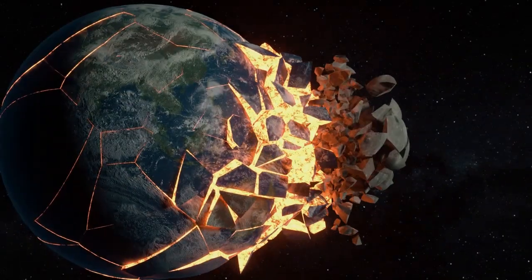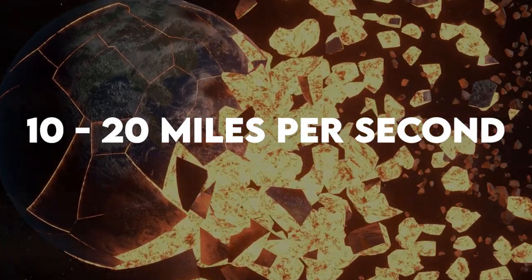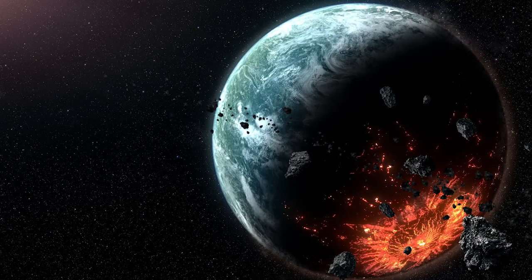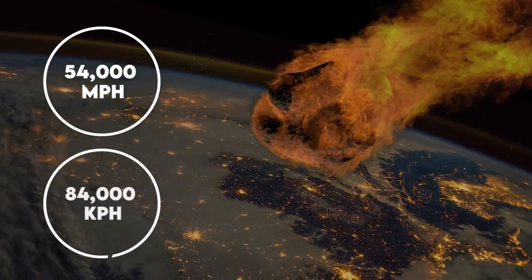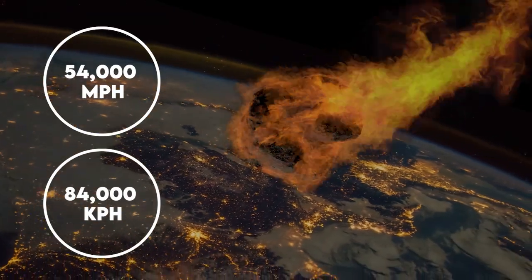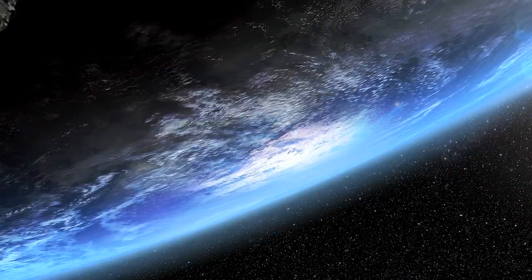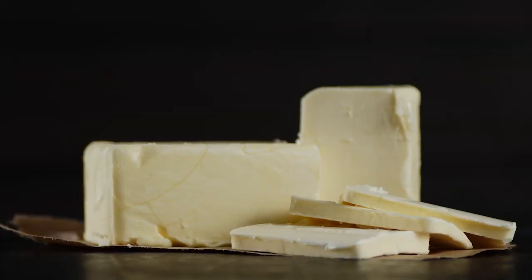The typical asteroid hits the Earth's atmosphere at a speed of 10 to 20 miles per second or 16 to 32 kilometers per second. On average, that equates to 54,000 miles per hour or 84,000 kilometers per hour, which is about 30 times faster than a bullet. A tiny rock traveling at that speed will go through an astronaut like molten lead through butter.